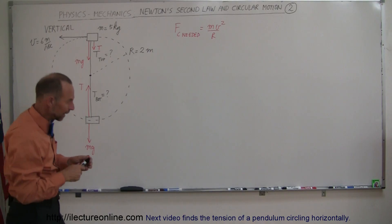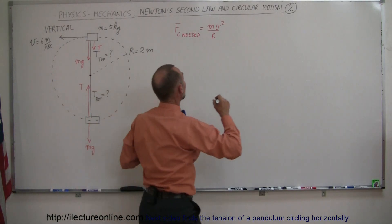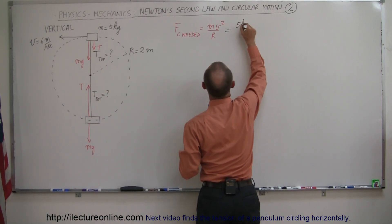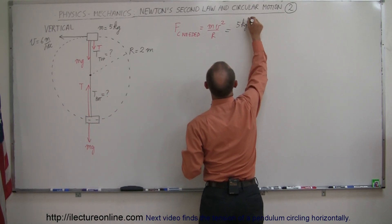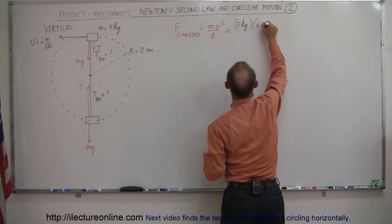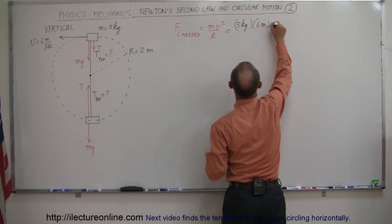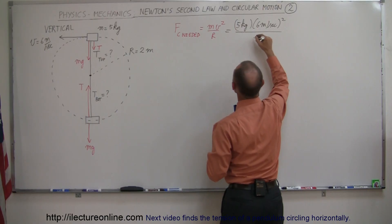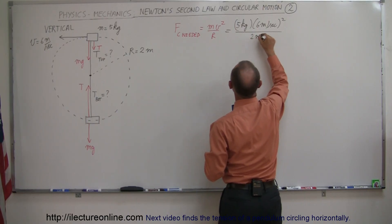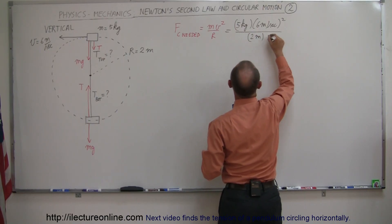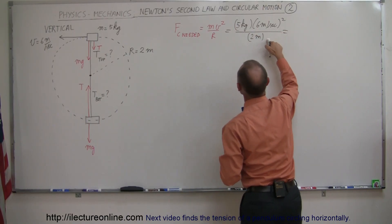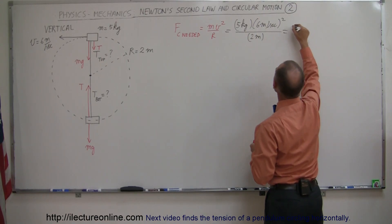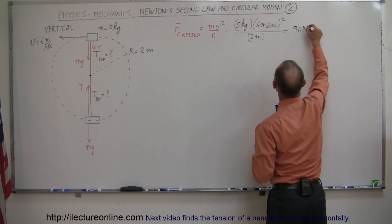The mass is 5 kg, the velocity is 6 m/s, and the radius is 2 m. So F_C = 5 × (6²) / 2 = 5 × 36 / 2 = 5 × 18 = 90 N. So 90 N is the required centripetal force.